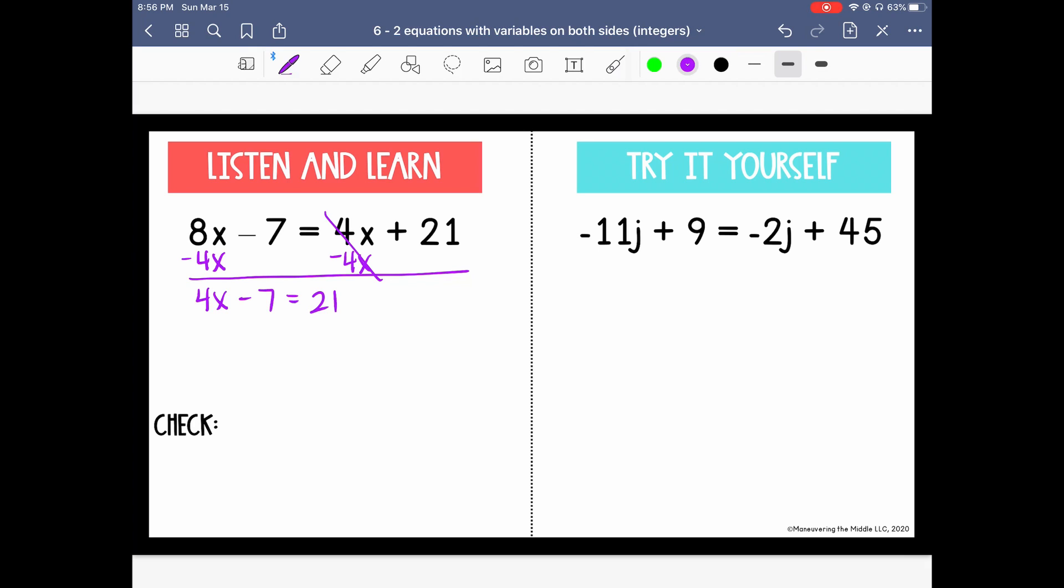Now we can undo the subtraction by adding 7 to both sides, so 4x equals 28. And the last step is to undo the multiplication, so divide both sides by 4, and x equals 7.